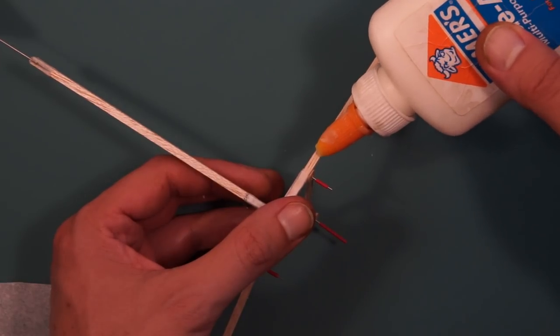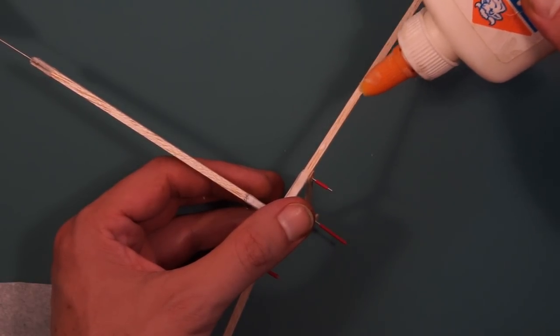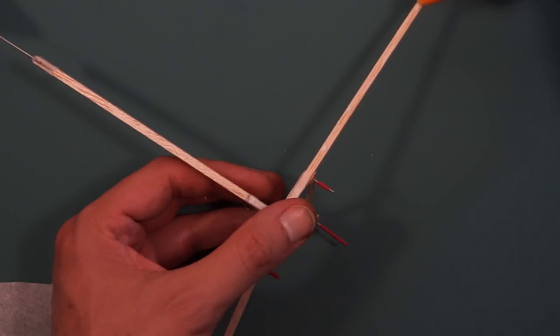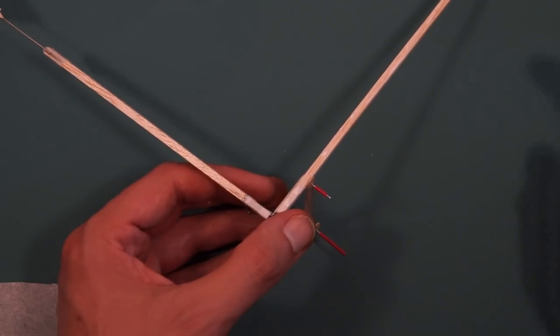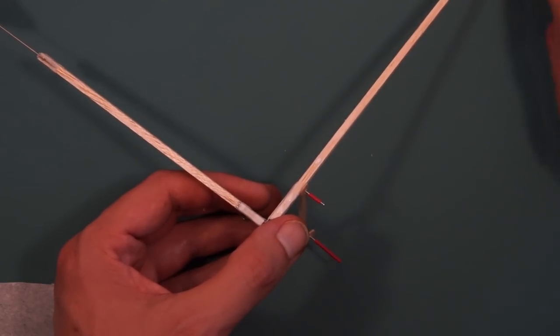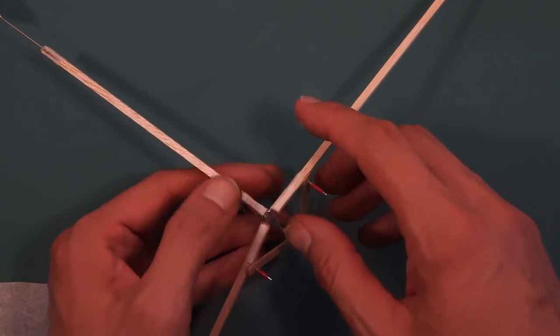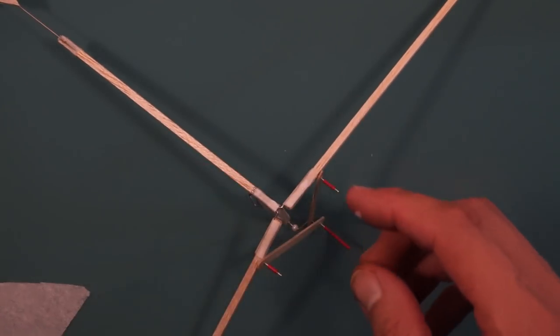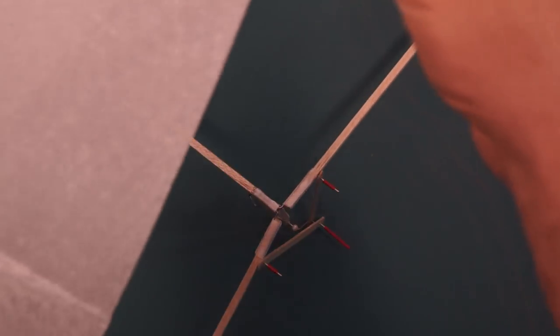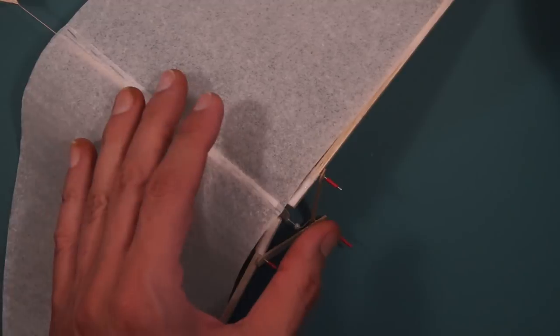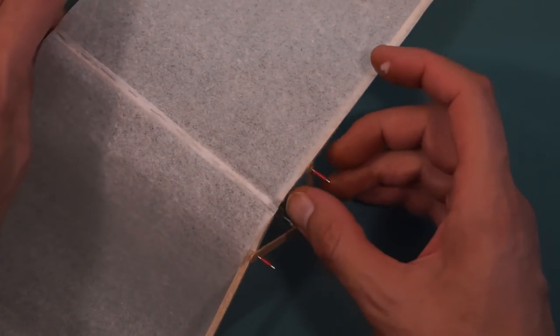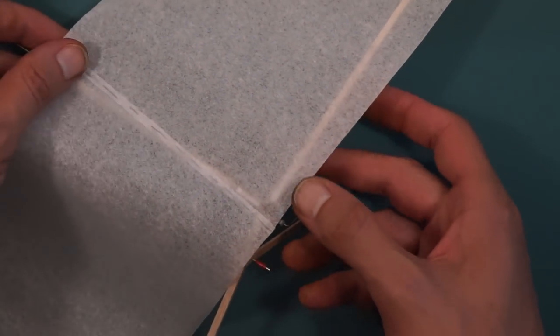I'm going to apply a thin layer of glue to the top of the wing spar, spread it out with my finger. Position the wing tissue in place on top of the wing spar again making sure that the wing spar is all the way in its socket.